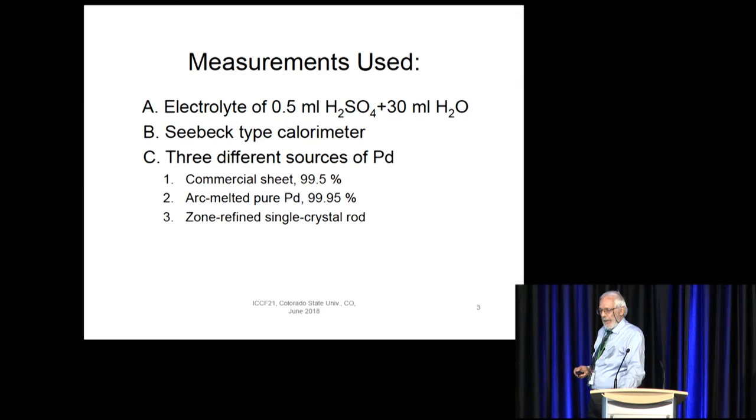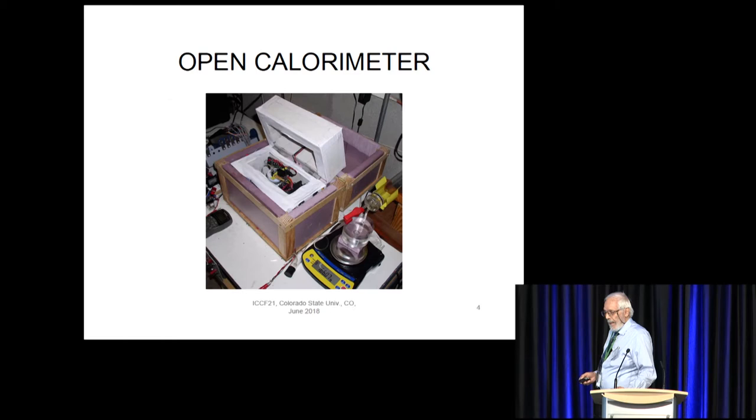I'm using a Seebeck calorimeter, and we'll be studying three different kinds of palladium: a commercial palladium, that's normal commercial concentration of palladium, and arc-melted super-pure palladium. Both of those are in the form of a sheet one millimeter thick. And a zone-refined single crystal, which would be very pure and somewhat unusual. The calorimeter is shown in the open condition. It consists of an aluminum box that's water-cooled on all sides. And on the inside is pasted 54 thermoelectric converters, all hooked in series. Any heat that's generated in the box, it doesn't matter where it originates, will be detected by the calorimeter. So you don't have to worry about gradients with this particular style.